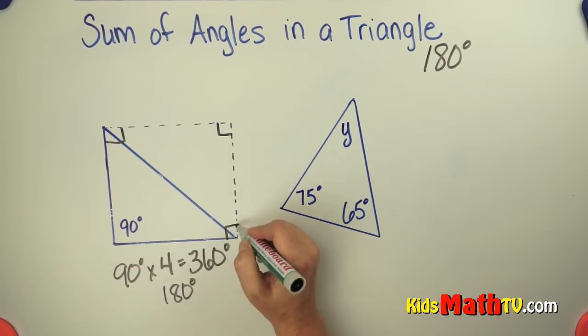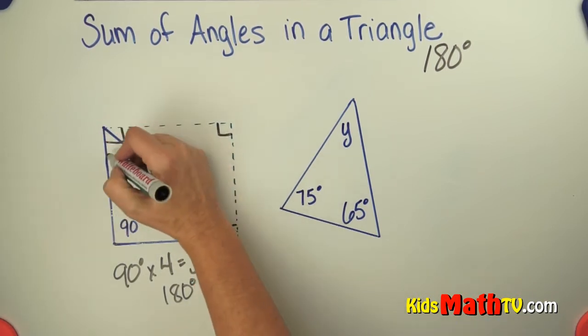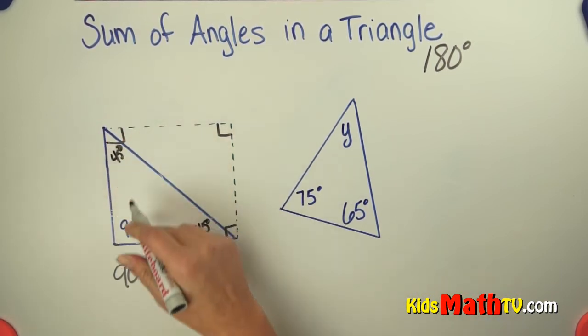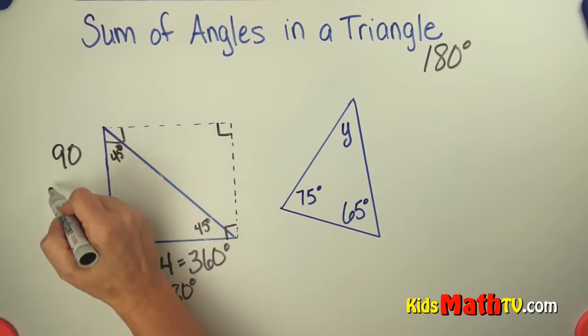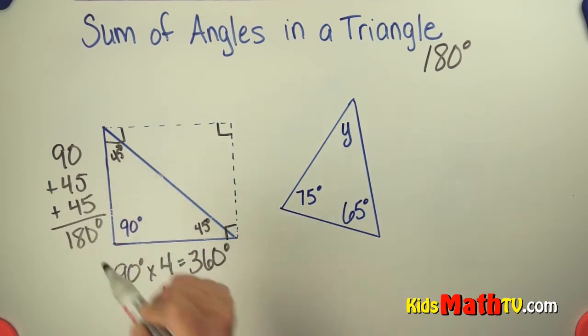This angle is cut in half, so it's a 45 degree angle. This angle is also cut in half, it's a 45 degree angle. And if we add 90 plus 45 plus 45, we get 180 degrees.